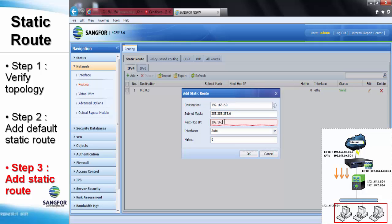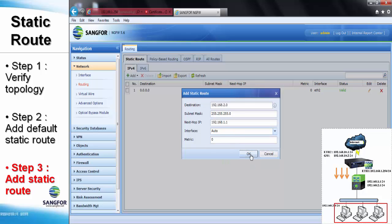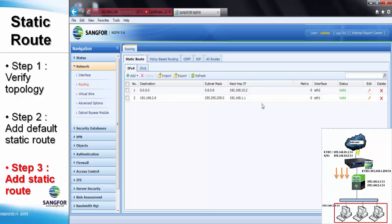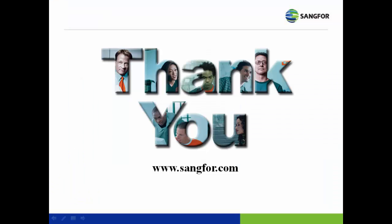We have to enter the next-hop address 192.168.1.1, which is the core switch. Once done, you can see the interface is automatically pointing to internet one and the status is valid. That's all for this tutorial.